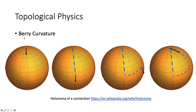My research deals with Berry curvature. What is curvature? We can detect curvature of a sphere by parallel transporting a vector in a loop. When we return to its original location, we realize that the vector has been rotated. In technical terms, this is known as holonomy of a connection.